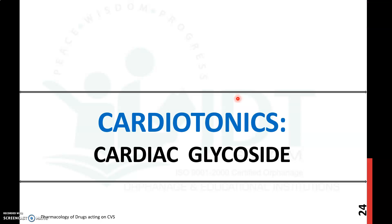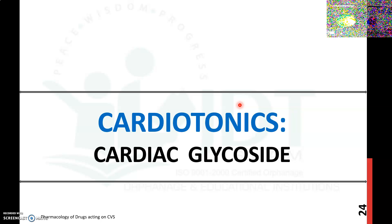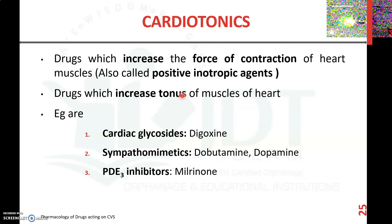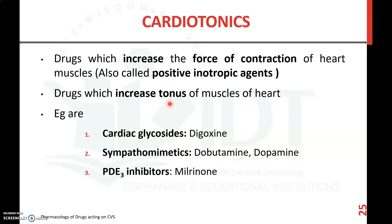In this video, we will discuss cardiotonics, specifically cardiac glycosides. From the word itself, we can understand that cardiotonics are agents which increase the tone of cardiac muscles. As a definition, these are drugs which increase the force of contraction of heart cells, thereby they are also known as positive inotropic agents — drugs which increase the tonus of muscles of the heart.